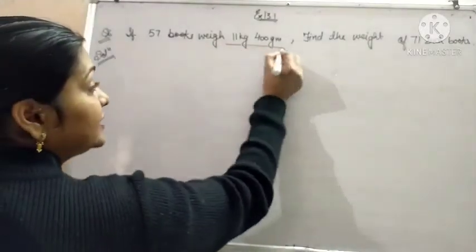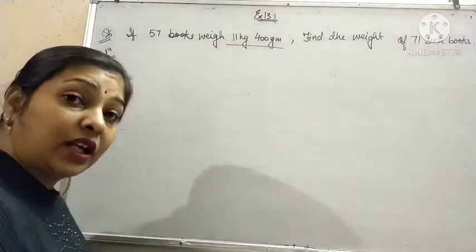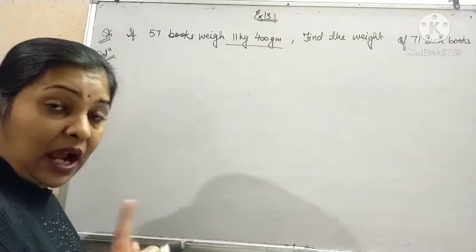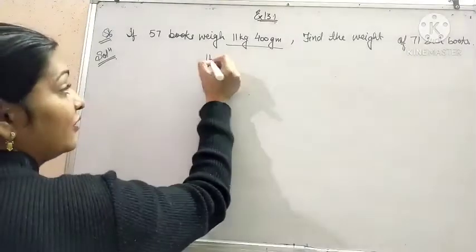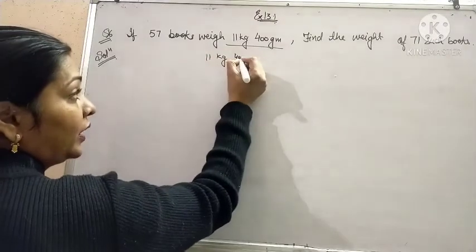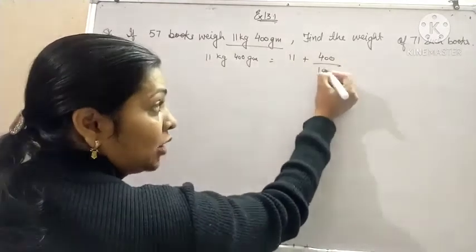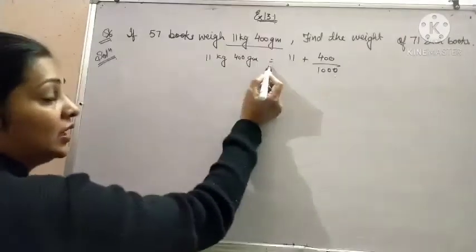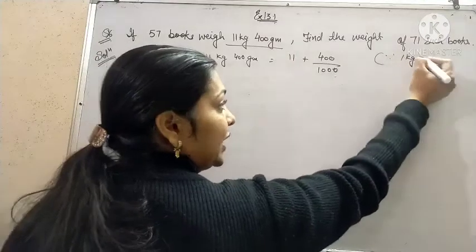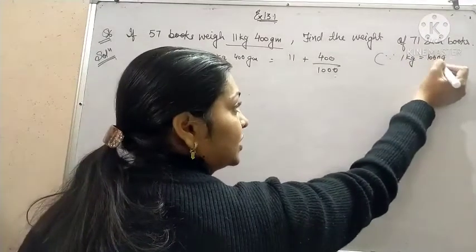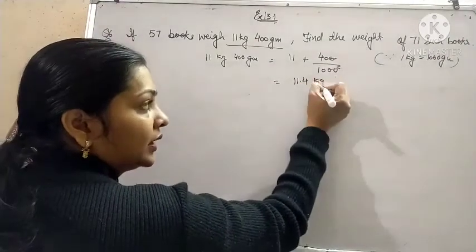So before making the table we can see that it is given in 11 kg 400 gram. We will convert it into single unit, either kg or gram. So 11 kg 400 gram is equal to 11 plus 400 by 1000, because 1 kg is equal to 1000 gram. So it will be 11.4 kg.